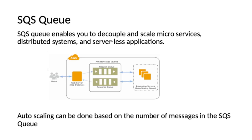For the AWS Solutions Architect Associate exam, you may barely get a question based on SQS, but if there is one, it will be regarding the autoscaling option based on the number of SQS messages. The number of messages in SQS are monitored and a policy can be created with a threshold number of messages to push the autoscaling group to scale up or down.